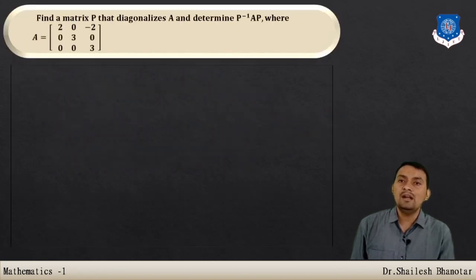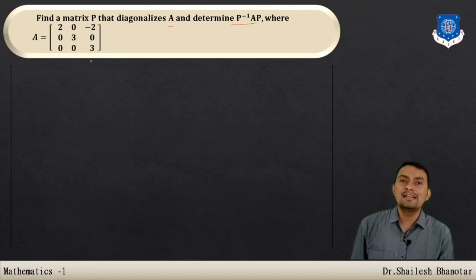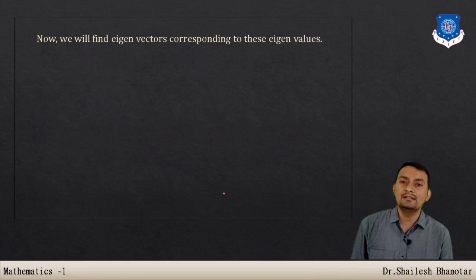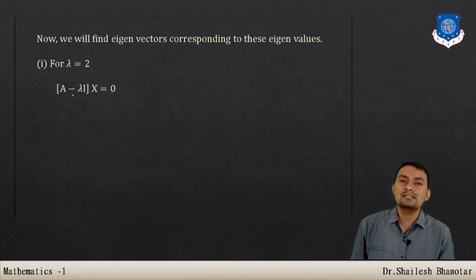Let us look at the first example: find the matrix P that diagonalizes matrix A, and determine P inverse AP. The given matrix A is an upper triangular matrix, so it is clear that the eigenvalues are 2, 3, and 3. Our target now is to determine the corresponding eigenvectors. Start with λ = 2 using (A − λI)x = 0.